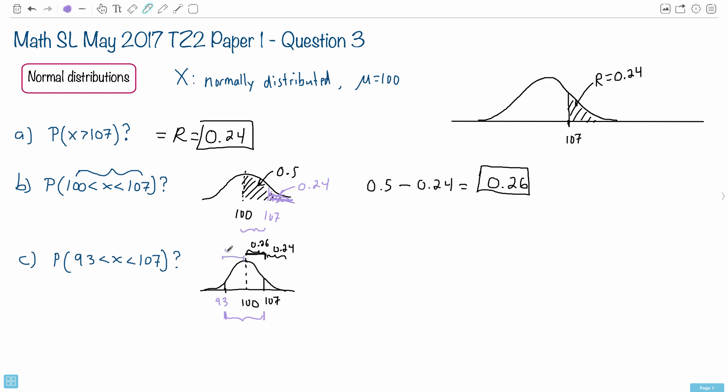This piece from here. Because if that piece to the right, from the mean to that 107 here, if that's 0.26, by going 7 to the right, then 7 to the left is also the same amount.